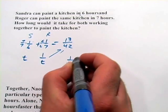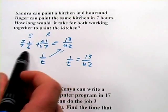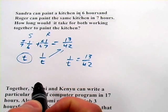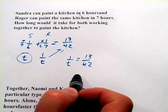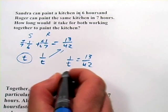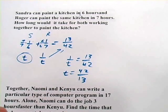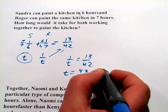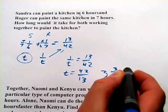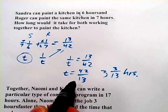So one over t equals thirteen over forty-two. And I've just said that t is the total time it takes to get the whole job done with Sandra and Roger working together. So all I have to do is solve for t now. And I can take the reciprocal of both sides here, and I simply get t equals forty-two over thirteen, which is three and three thirteenths hours. So that's how to do that work problem.